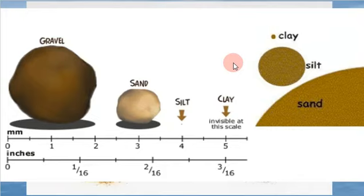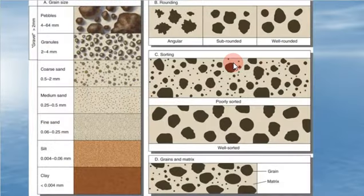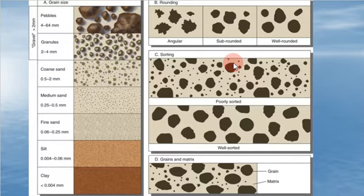You can see there how small the clay is. If sand is that big, and silt is smaller, and clay even smaller — we can see comparisons with pebbles, granules, coarse sand, medium sand, fine sand, silt, and clay. So depending on what beach you're on, we have different kinds of sand.